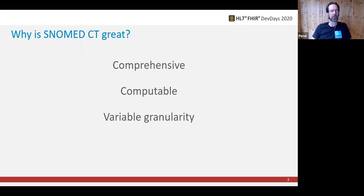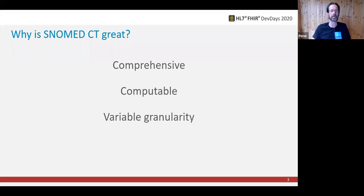The last point, variable granularity, only really dawned on me recently because I always thought of SNOMED as being the most granular, most specific terminology. But in fact, it can be used at whatever level of detail you need. For decision support, for example, you want to know exactly what condition a patient has, the medicines they've been given. But for population level reporting, you might want to do that analysis far more generally — say, patients with lung conditions. So you can take that fine-grain detail in the underlying data and look at it with a far more abstract view, whatever level of detail your use case calls for.